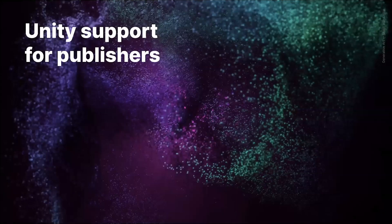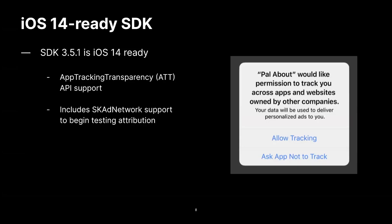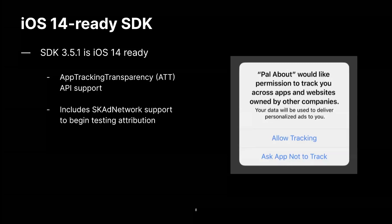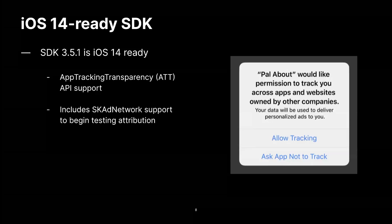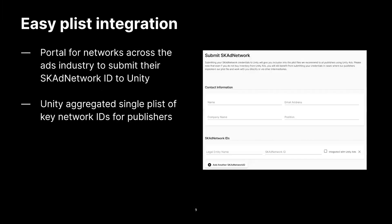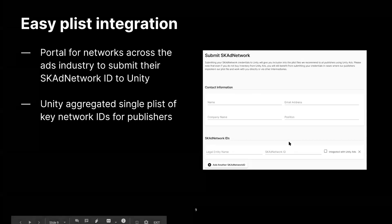At Unity, we've been preparing for increased privacy in the ad world for some time. And with iOS 14 news, we want to support a smooth transition for publishers and advertisers alike. Our newest SDK for Unity Ads is ready — version 3.5.1. It's built to be iOS 14 compatible by functioning with ATT opt-in flow and SK Ad Network attribution. Unity also allows game publishers to test the user experience prior to the enforcement of iOS 14's new privacy guidelines by providing access to iOS 14 APIs via packages and made-with-Unity games. We've also made a portal for networks across the ad industry to submit their SK Ad Network IDs to Unity. We currently have over 40 IDs aggregated into one plist file to make it easier for publishers to have all the common ones in place.